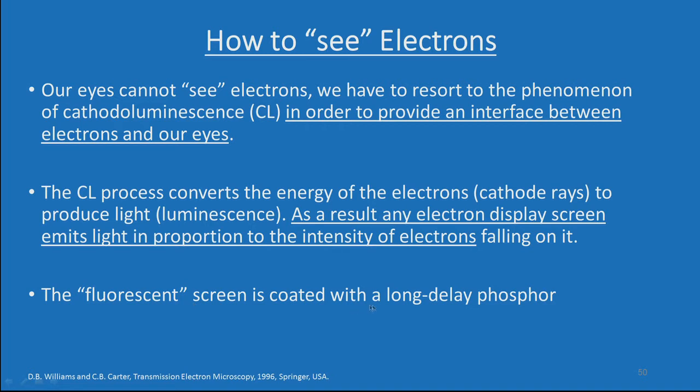Any electron display screen emits light in proportion to the intensity of electrons falling on it. The fluorescent screen is coated with a long-delay phosphor. The electron beam comes out of the sample after interacting with the specimen, and accordingly the intensity profile will change. That effect can be visualized only when you put it on the fluorescent screen, which will emit light depending upon the amplitude it receives, producing contrast. We will look at image formation in much more detail when we discuss the TEM imaging section.